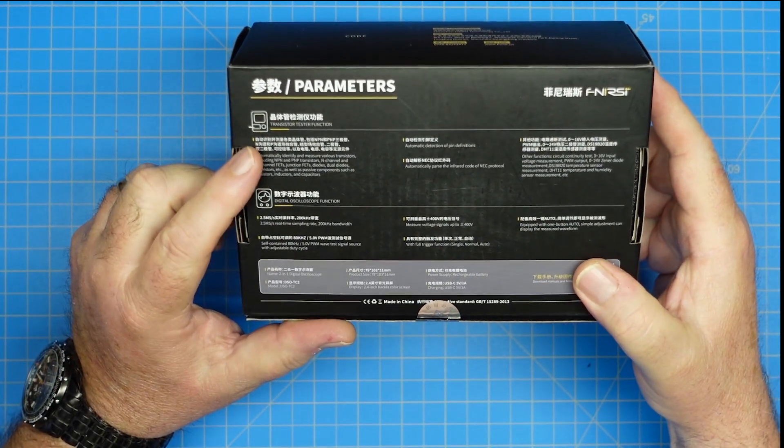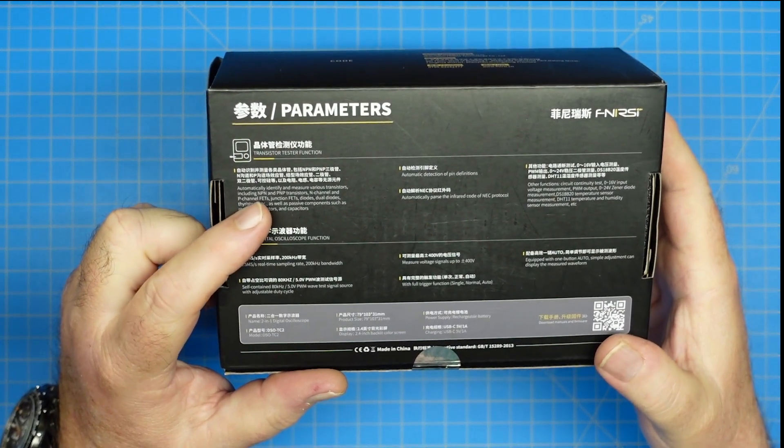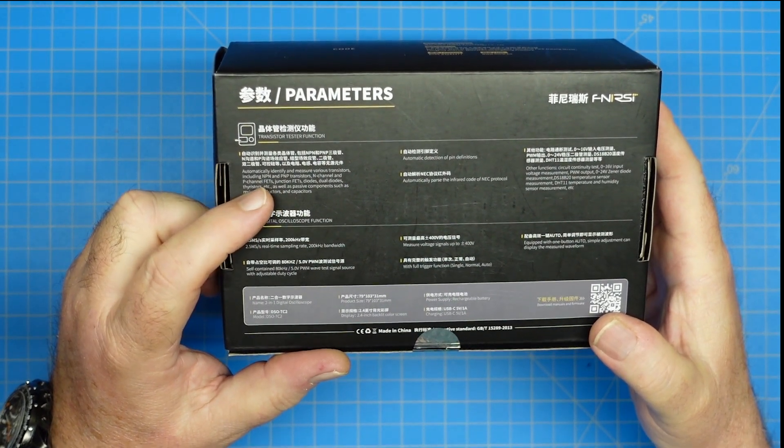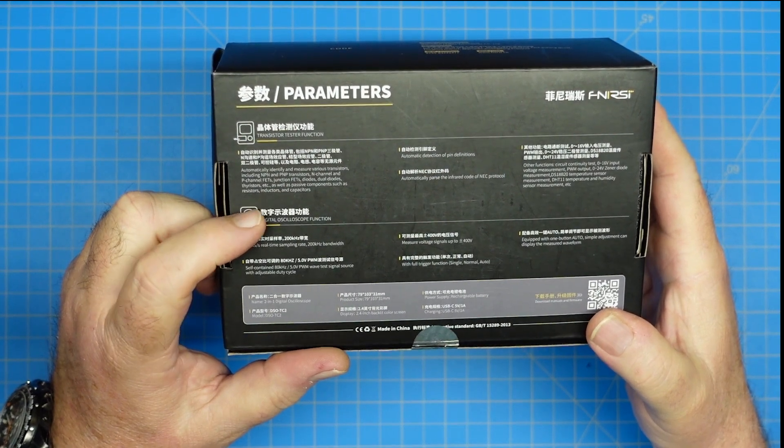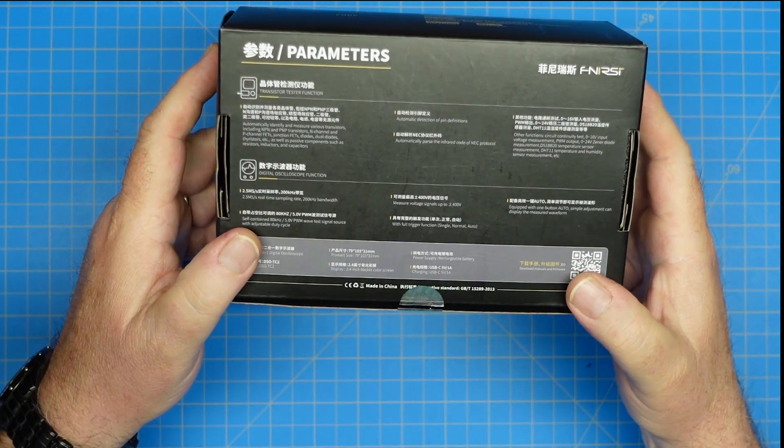This is a transistor tester and it will automatically test and identify various kinds, NPN and PNP transistors, N-channel and P-channel FETs, junction FETs, diodes, thyristors, as well as passive components, resistors, inductors, capacitors, and so on.